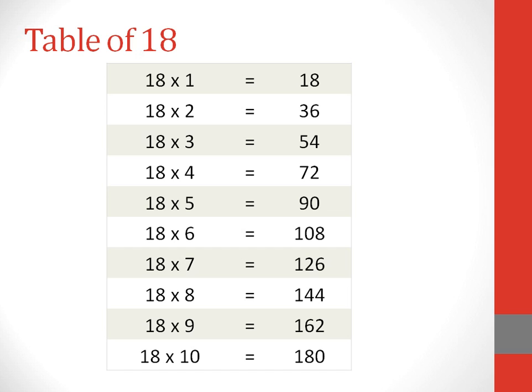18 sixes are 108. 18 sevens are 126. 18 eights are 144. 18 nines are 162. 18 tens are 180.